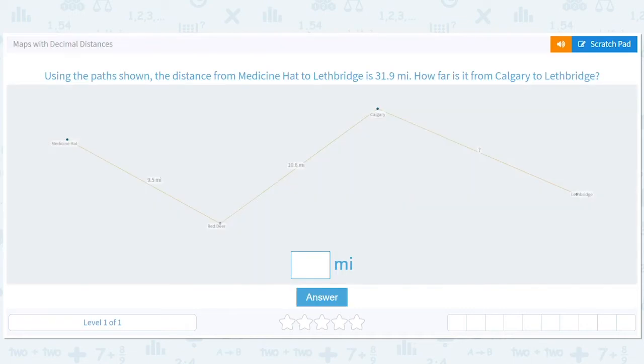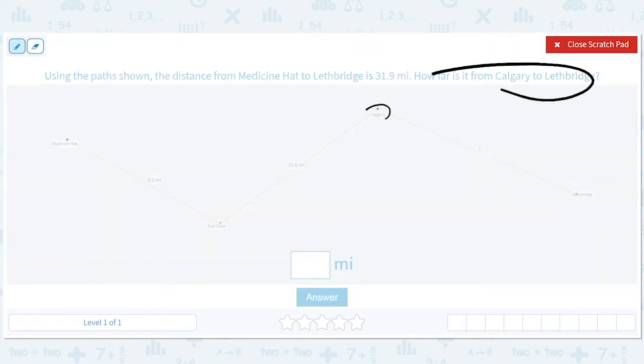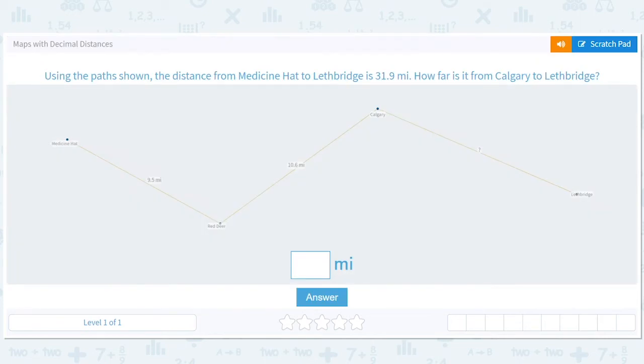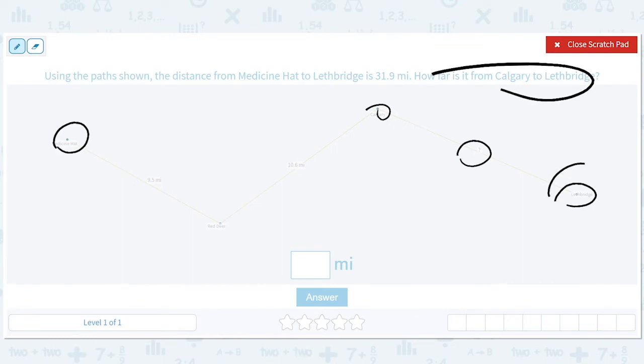So the question is, how far is this? You can see it in the question, Calgary to Lethbridge, and you can see where the question mark is. The idea is the whole thing, the distance from Medicine Hat all the way to Lethbridge, is 31.9.